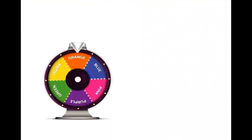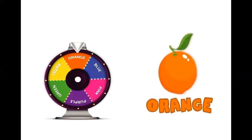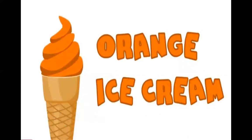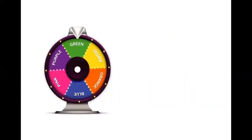So the first fruit — can you see here? It is an orange. The color of orange is orange, so this is an orange ice cream. Correct!